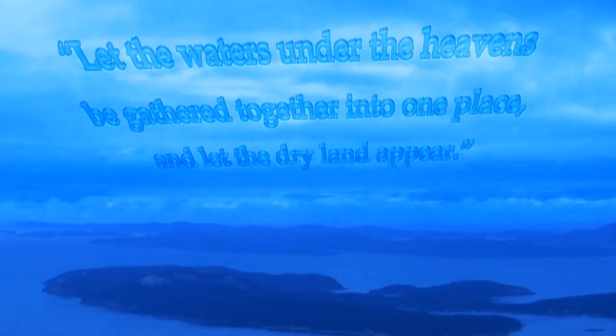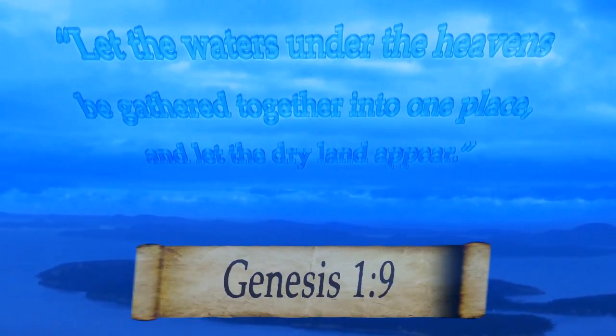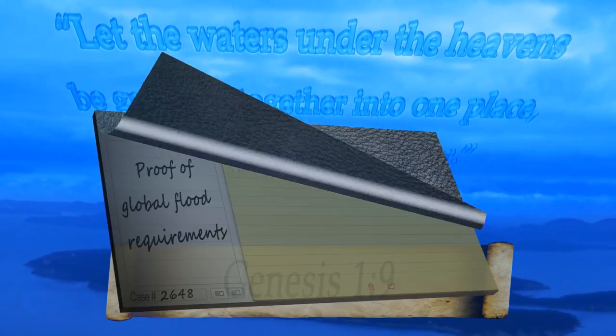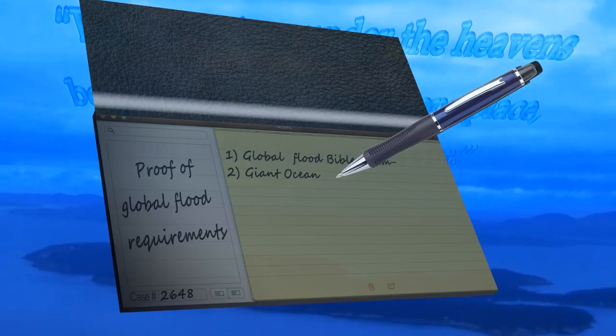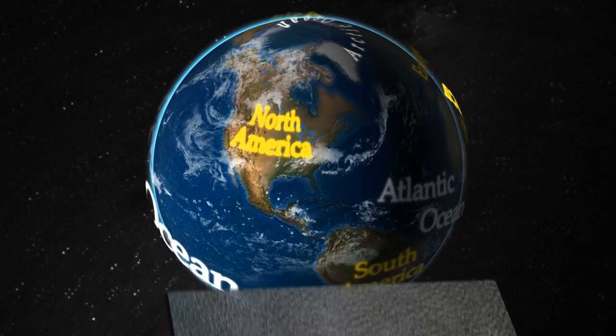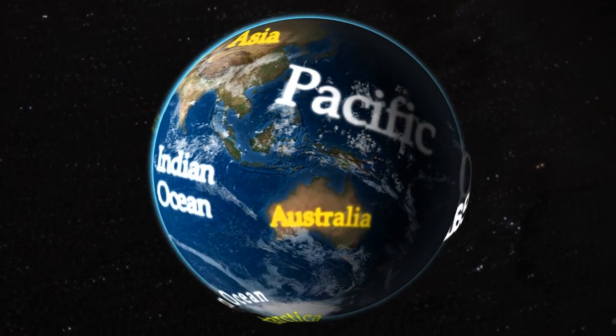In Genesis 1:9, it testifies that waters were once gathered to one place, with a dry land distinction. This testifies that a single gigantic ocean of a single unified land mass once existed. This implies that at one time all the continents were joined, surrounded by a great ocean. Whereas today, we have seven continents and five great oceans.